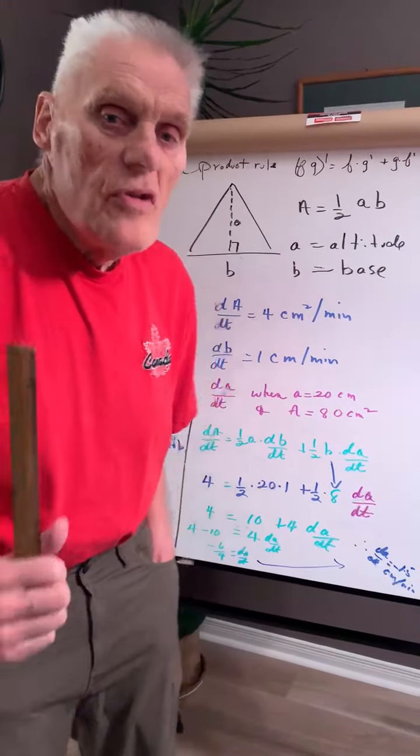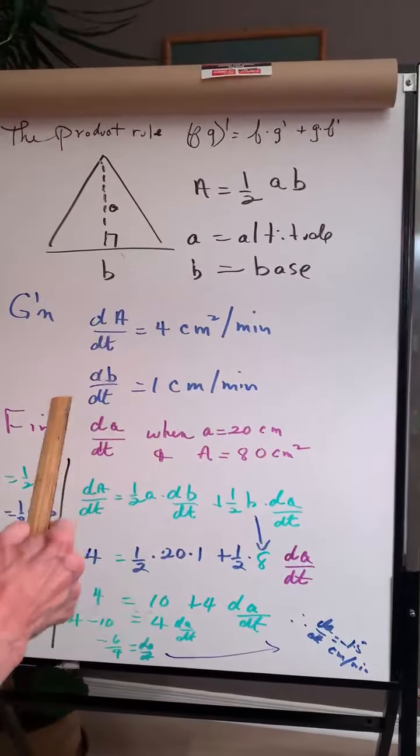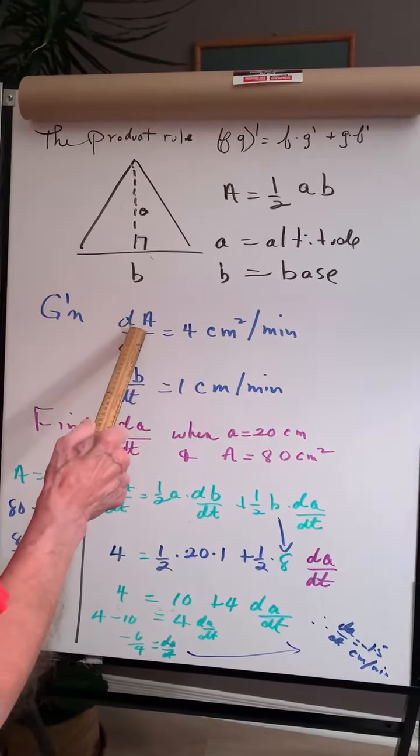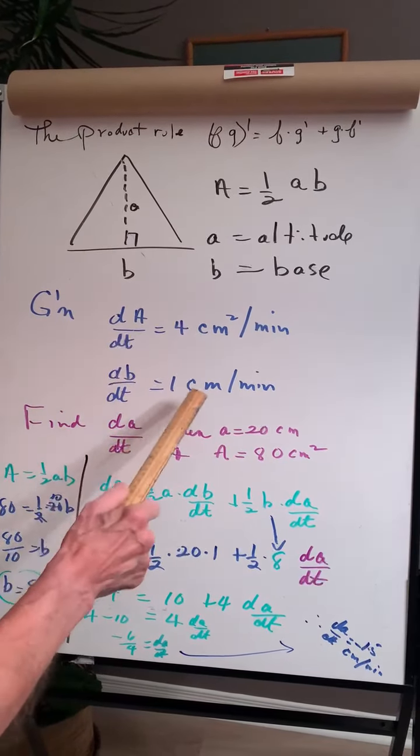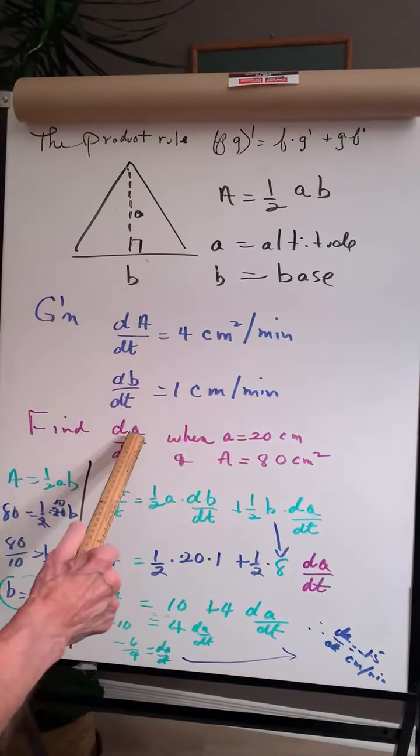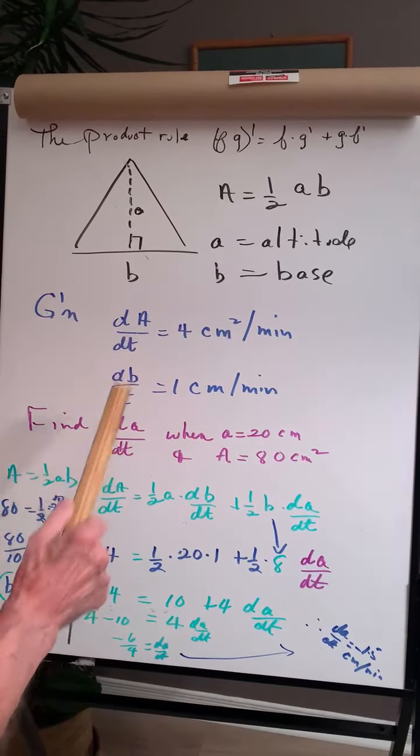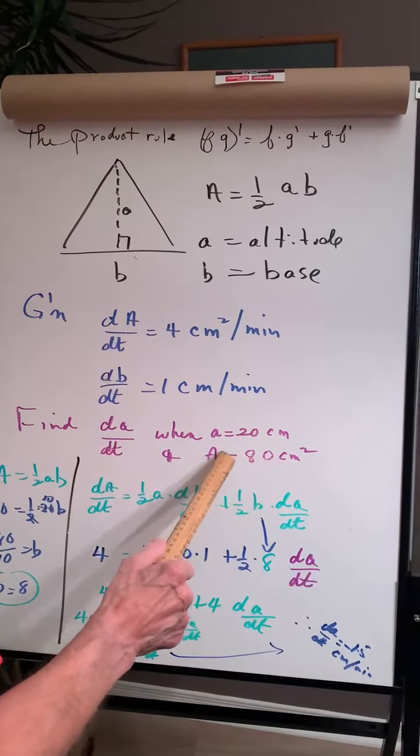We have to use the product rule to solve this problem that has three things moving in this triangle. The area is changing at 4 centimeters per minute, the base is increasing by 1 centimeter per minute. What's going to happen to the altitude when a is 20 centimeters and the area is 80 centimeters squared?